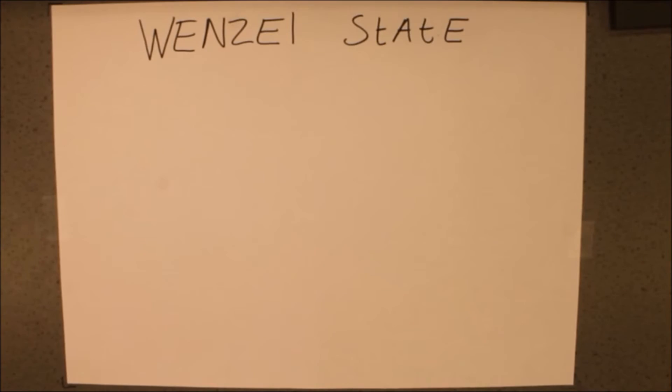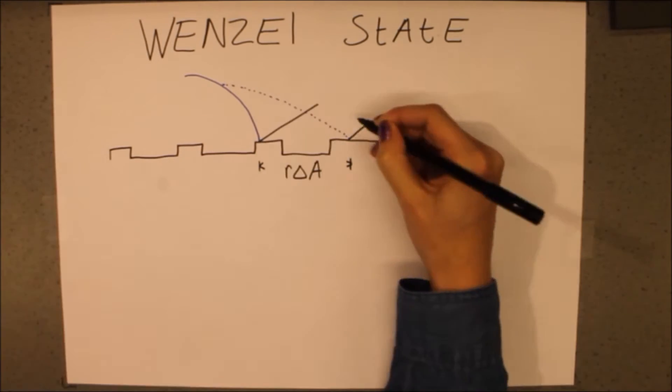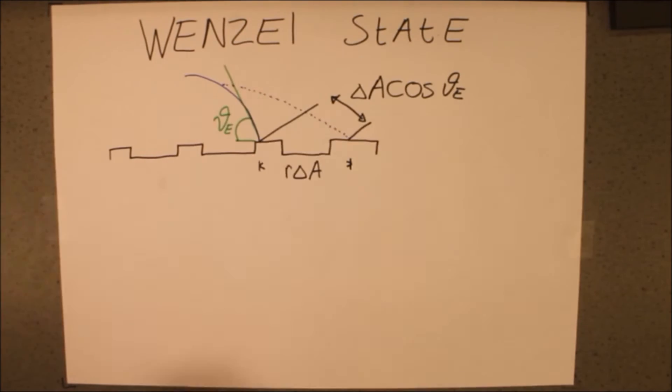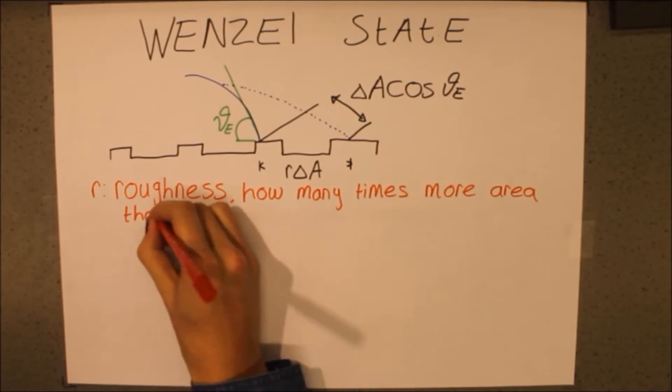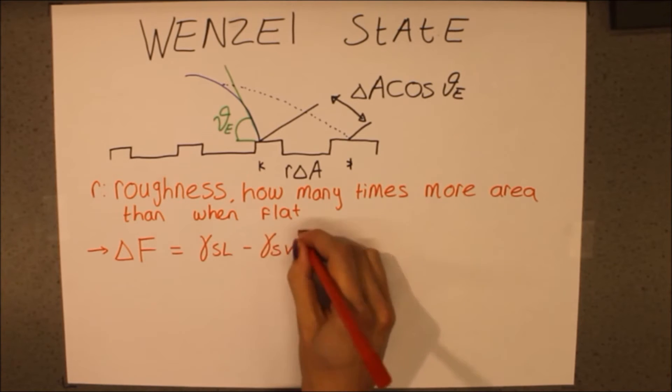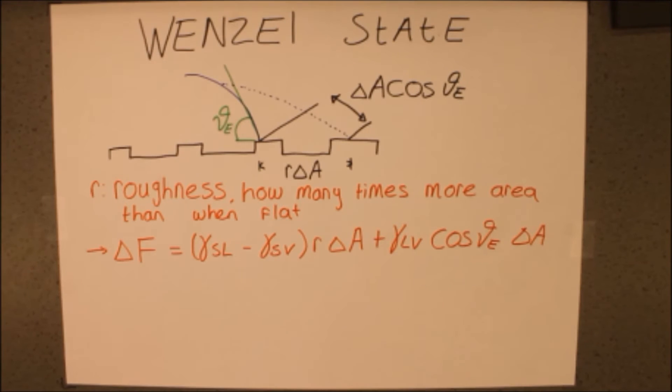Let's look at the physics behind the Wenzel state. We zoom in to the edge of the droplet. We introduce the roughness factor as R, which counts for how much the area is increased compared to a flat surface. Looking at the change in free energy again, we find that only the first term is affected by R.